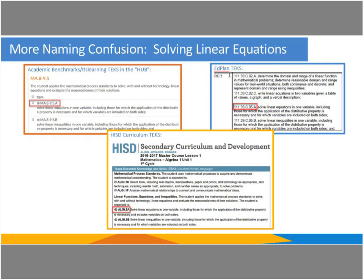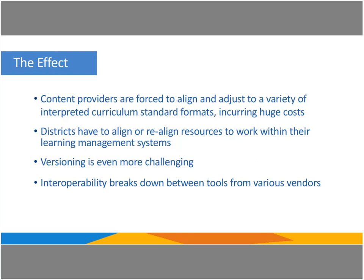Just within Houston ISD, we had things called by different names depending on which document you were looking at. Through Academic Benchmarks — our third party that publishes GUIDs for our learning standards — it was called MA.89.5A. In our secondary curriculum and development master course documents it was called ALGE 1.5A. In EdPlan, our assessment platform, it was called 111.C.05.A — by the chapter number in Texas Education Code. So the exact same learning standard — solving linear equations — was called various names, which really caused confusion between digital systems. We were constantly creating crosswalks to have these systems communicate with one another.